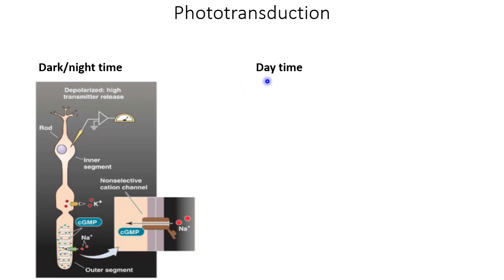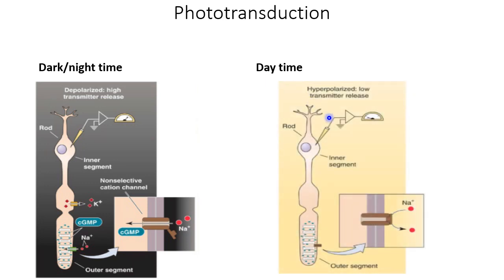The reverse happens in daytime when light falls on the rod. The production of cyclic GMP decreases, and this decrease in cyclic GMP in the outer segment closes the cyclic GMP-gated sodium channels. There is loss of positivity inside, but the potassium leak through the inner segment continues, creating more negativity inside the cell and hyperpolarizing the rod during daytime.